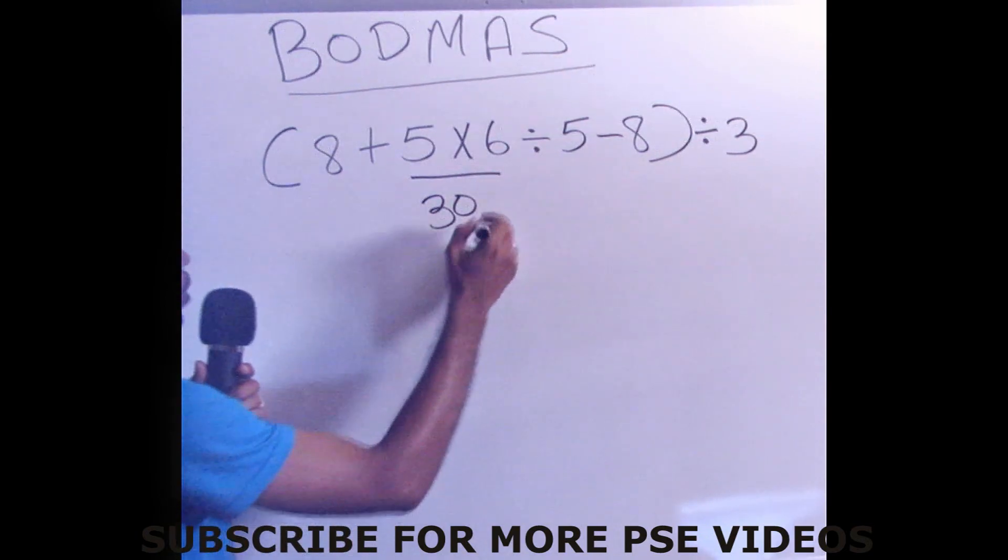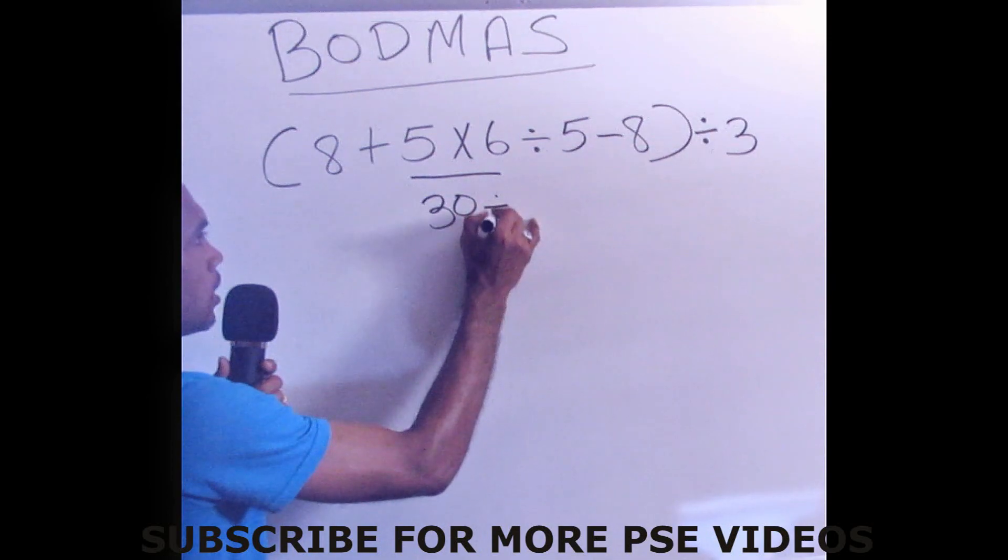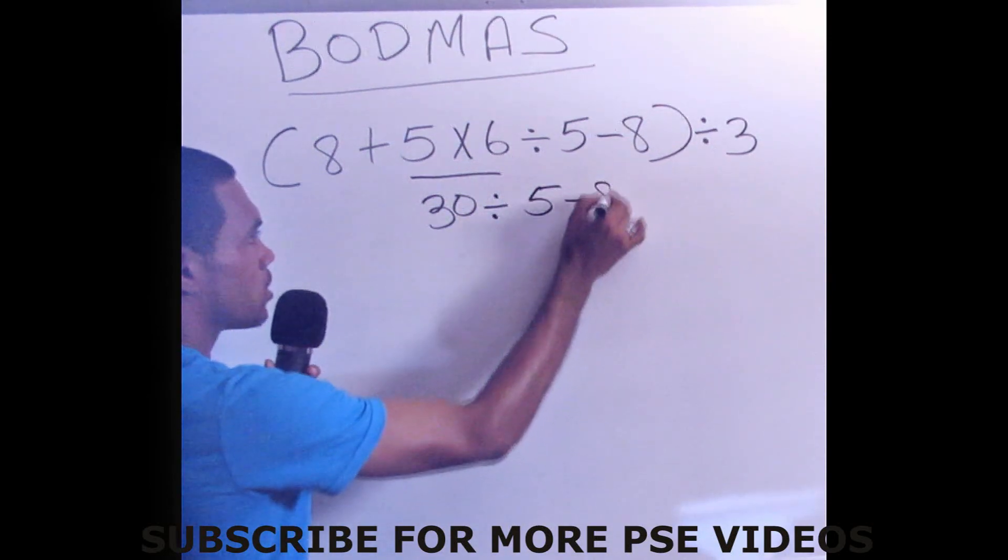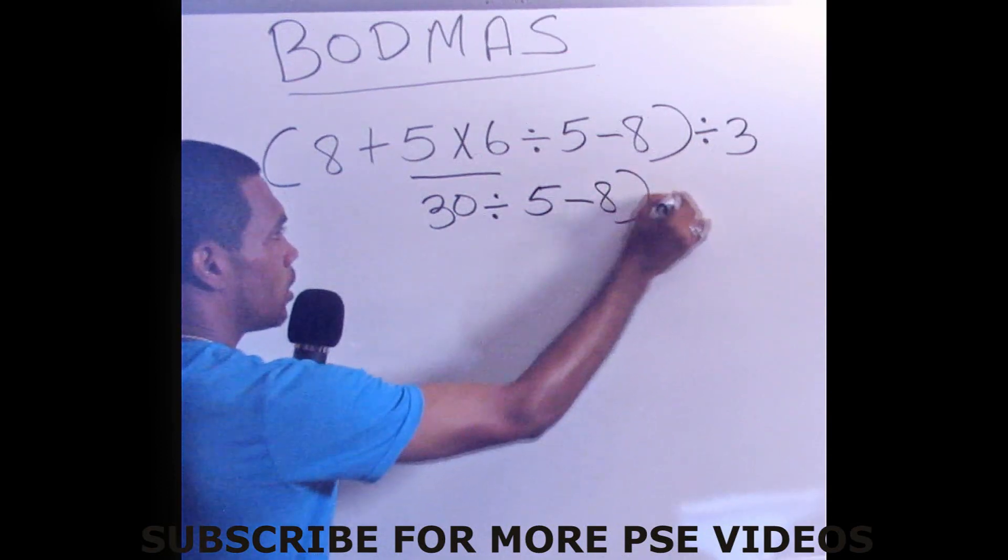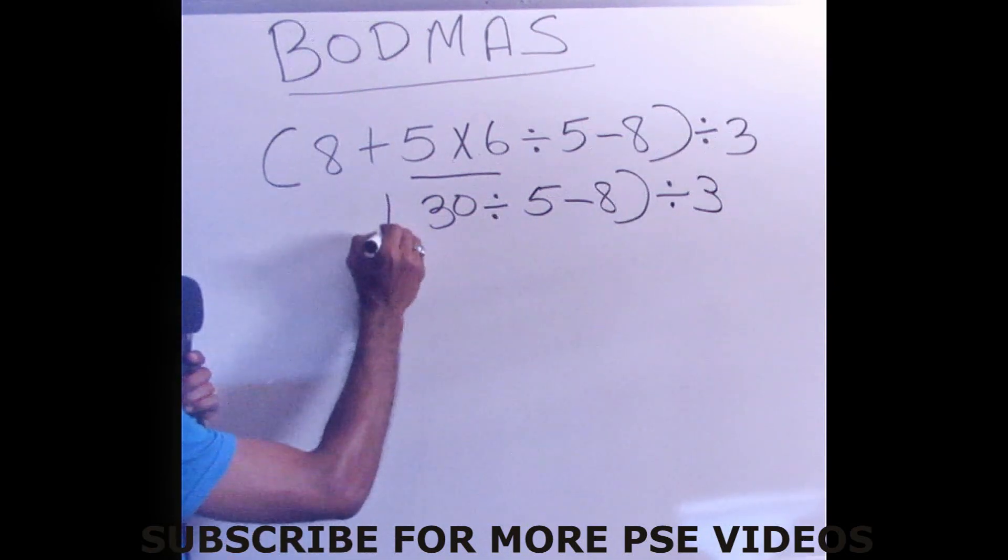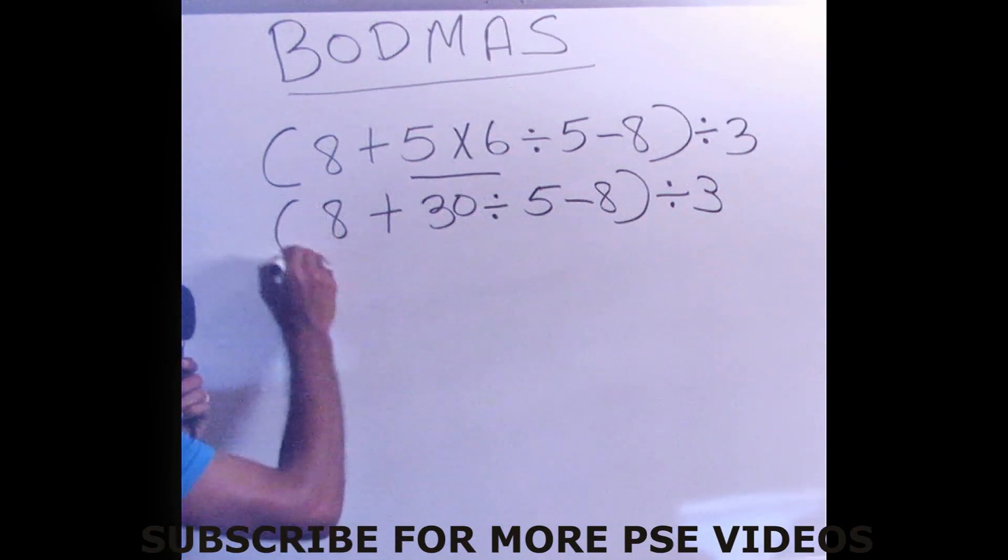So after we multiply, we bring down our division sign, bring down your 5, bring down your minus 8, close bracket, divided by 3. Then you bring down your plus 8, and you close bracket.